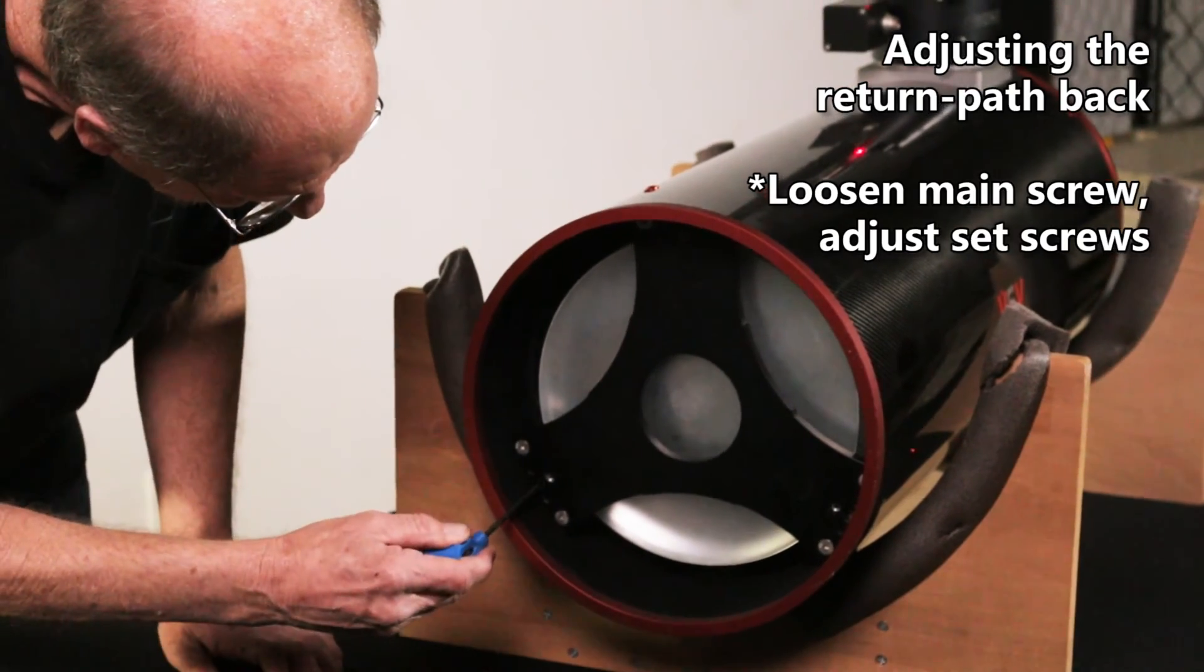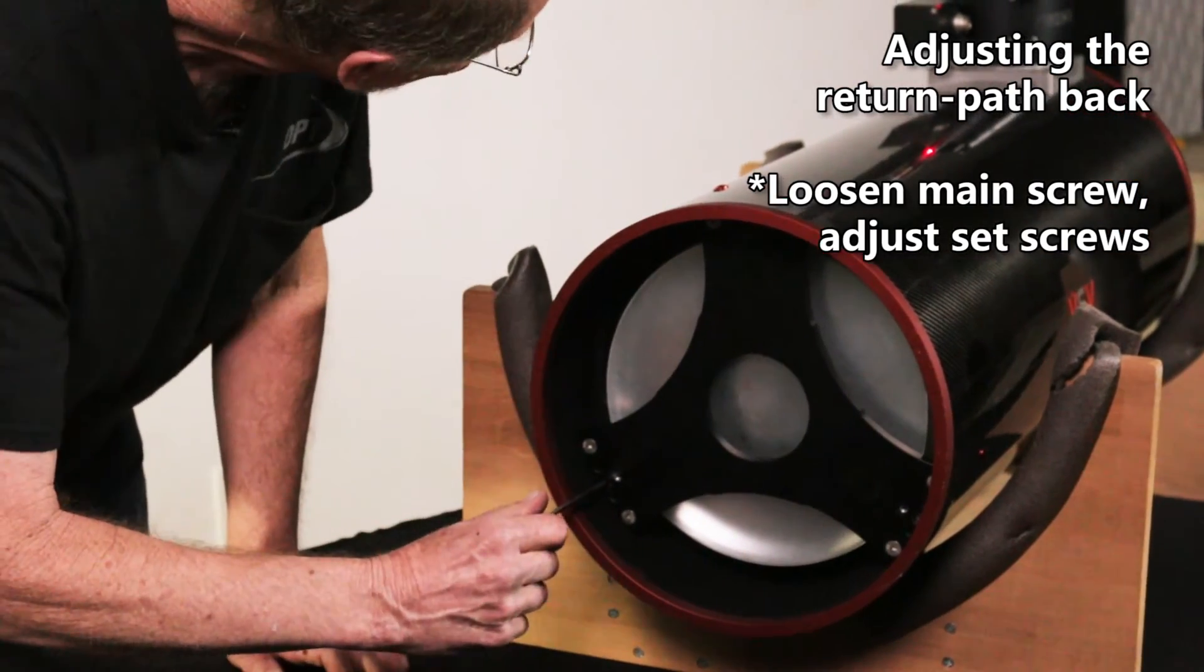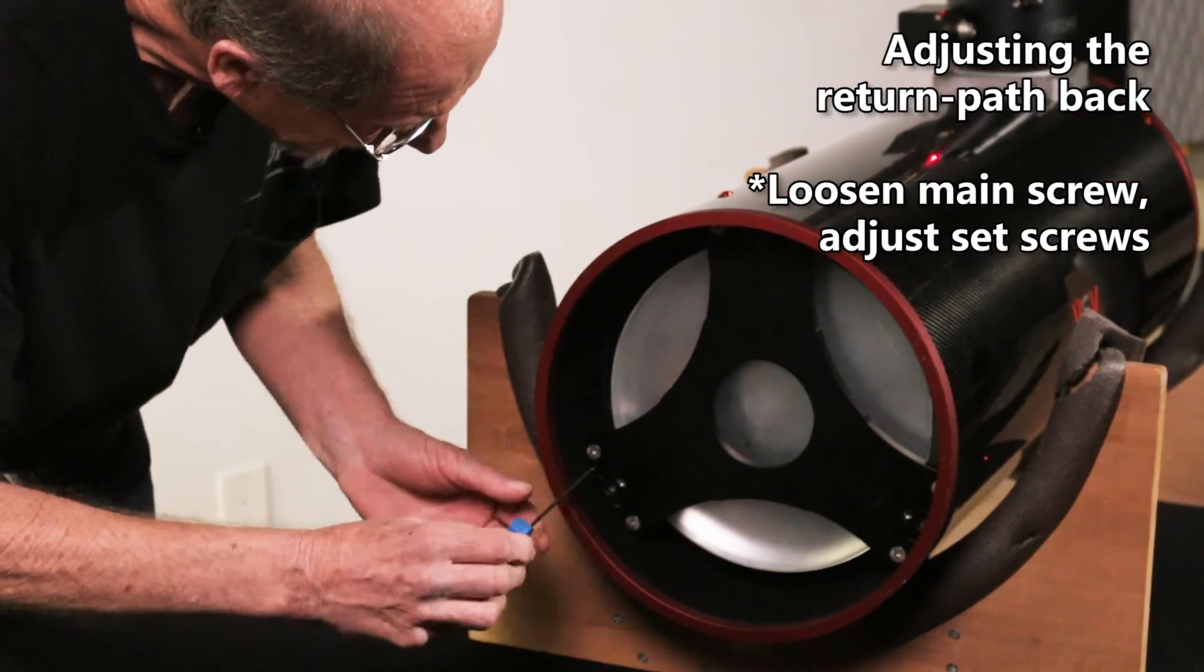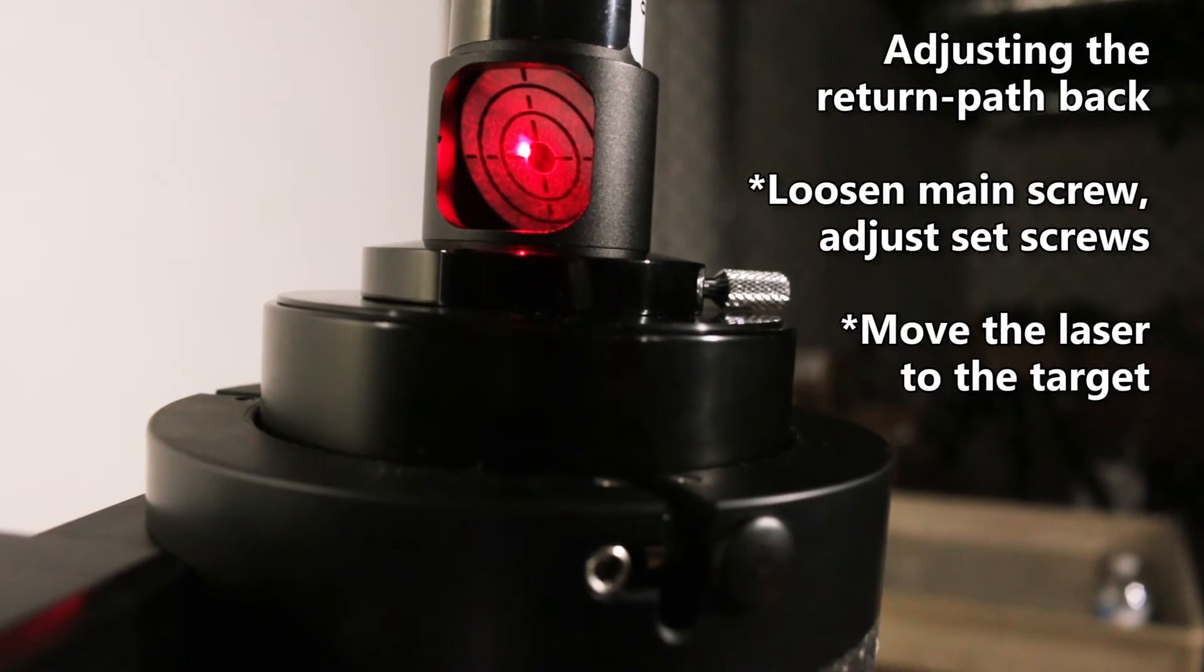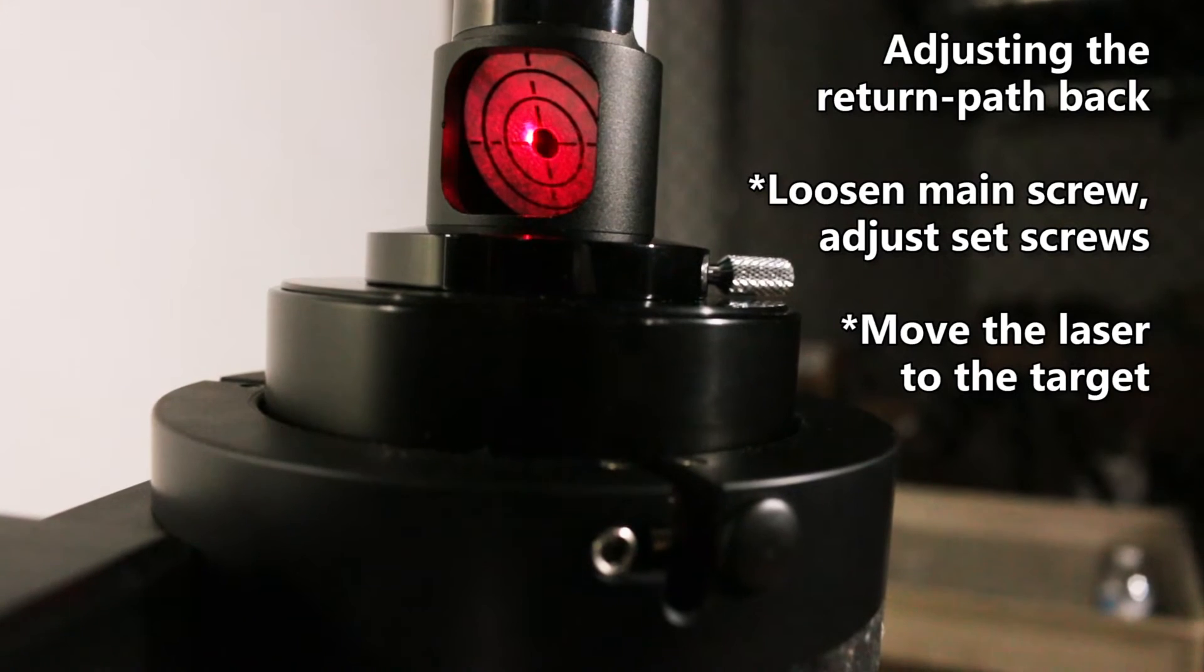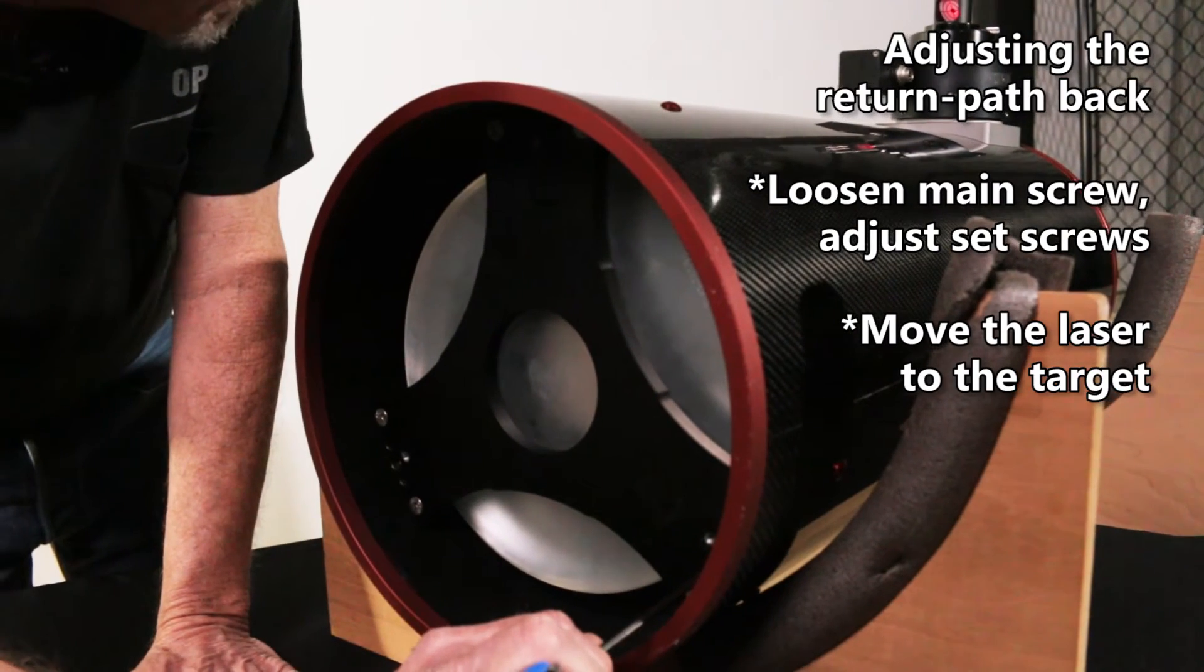So what we're going to do is loosen this primary bolt here and then we're going to make adjustments to the small set screws here to move the laser toward the target. There it's moving it up. Try another one over here.